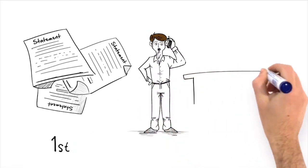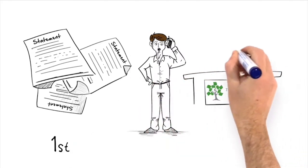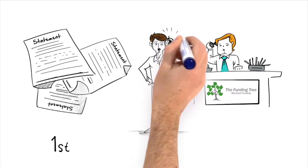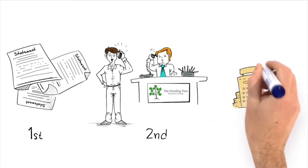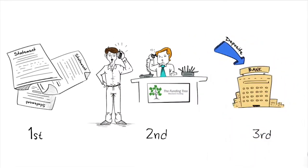Secondly, within minutes, The Funding Tree gave John an offer he couldn't refuse. So John accepted the offer. And thirdly, within 24 hours, the money was in his bank.